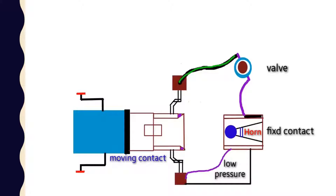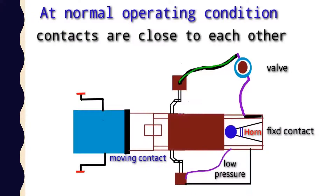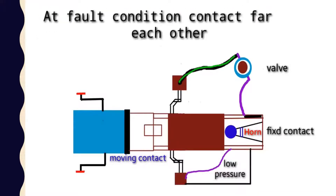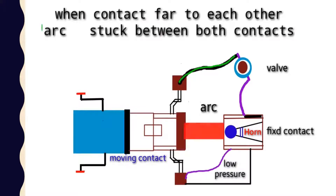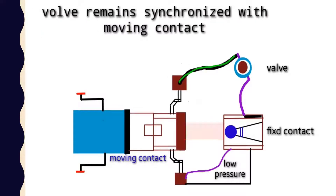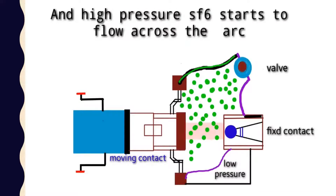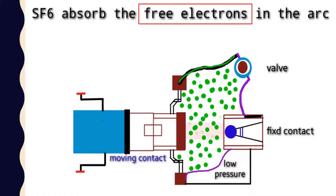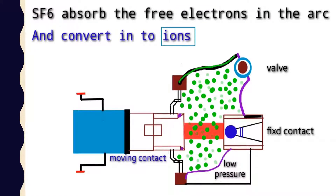Here you can see clearly. Under normal operating conditions, both contacts remain closed. As soon as any type of fault occurs in the system, both contacts separate from each other. As soon as both contacts separate, an arc is struck there. Since the moving contact is synchronized with the valve, as soon as the moving contact moves, the valve also opens, and high pressure SF6 gas begins to flow across the arc. The free electrons in the arc are absorbed by the SF6 gas.